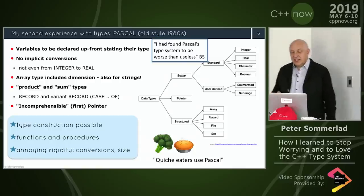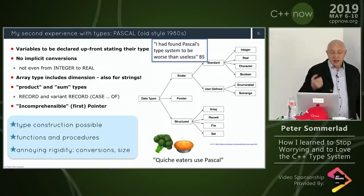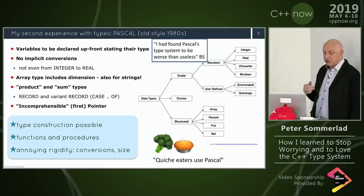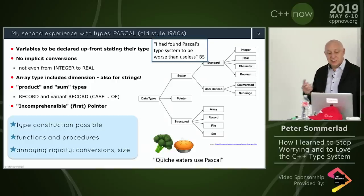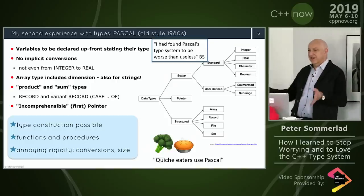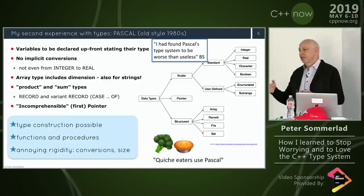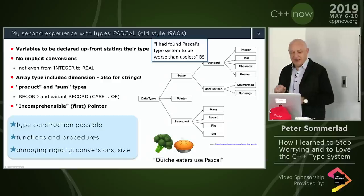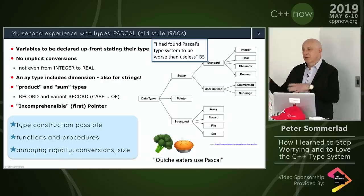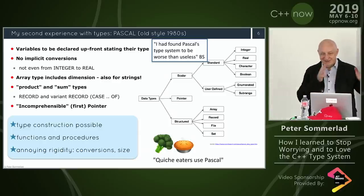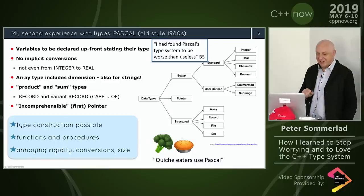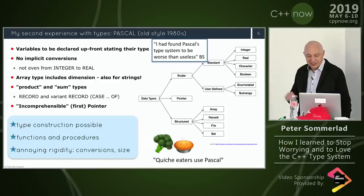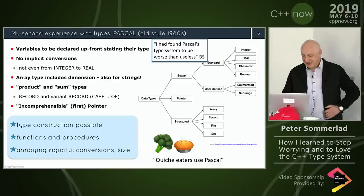In Pascal we can construct types: we have records, variant records that must be discriminated, and arrays. We have a kind of string which is actually a character array of fixed size — one of the most annoying things when writing real-world applications in Pascal. I'm not talking about Turbo Pascal, which had decent strings, but plain Pascal. And we all know it's either muesli or quiche eaters who use Pascal.